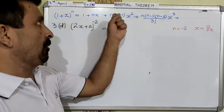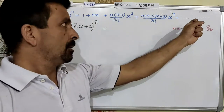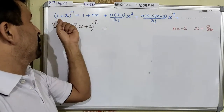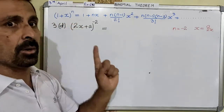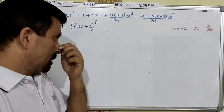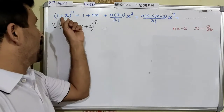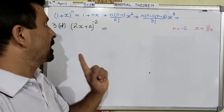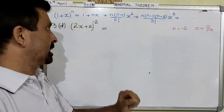Yesterday I gave you the formula of writing the binomial expansion. In the binomial, first of all, we have to make sure that the first term is always 1. For the negative index or for the fractional index, in the binomial, the first term must always be 1. Then after that, we can go for the binomial expansion.